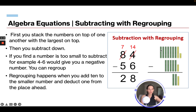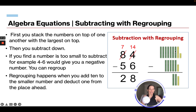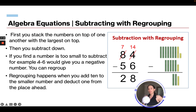Visually, each line represents 10 — so 10, 20, 30, 40, 50, 60, 70, 80, plus 4. You can't subtract 6 from 4 because there just isn't enough. So you take 10 from the tens group, giving you 7 tens and 14 ones. Now you can subtract 6 from 14, leaving 8, then subtract the remaining tens to get 2 rows — so you get 28. Regrouping happens when you add 10 to the smaller number and deduct 1 from the place ahead.